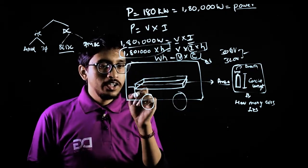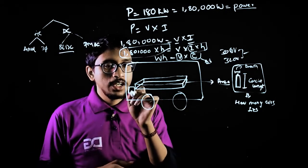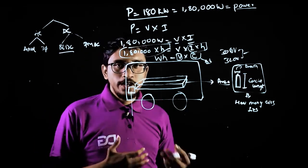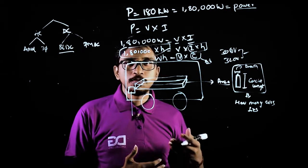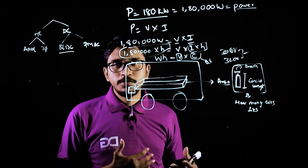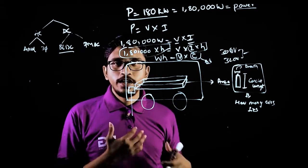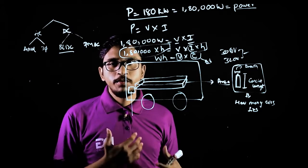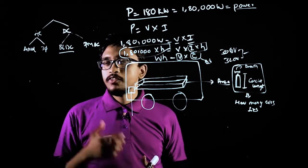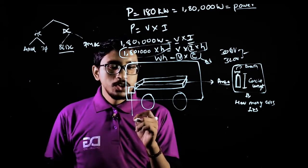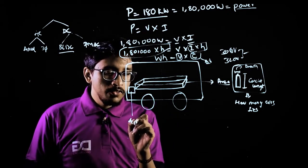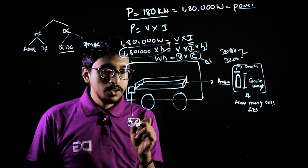Because when we are actually dealing with this high capacity power vehicles, the motor which we are going to use in these vehicles are not DC. Because as we already said, DC is having lots of power losses. The brush which is present in the DC will be getting rubbed and will be getting damaged very soon. So instead of that, we can go for AC.